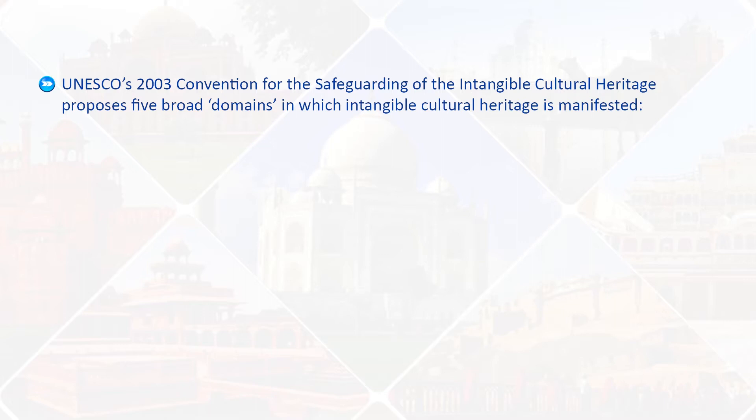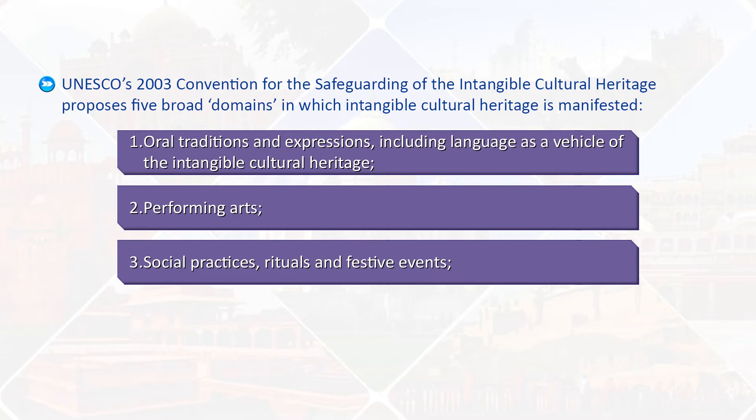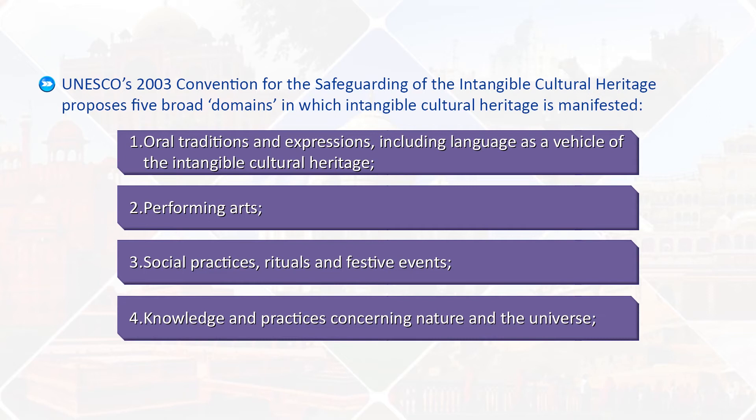It is called intangible because its existence and recognition depend mainly on the human will, which is immaterial and is transmitted by imitation and living experience. Intangible cultural heritage is also known as living heritage or living culture. UNESCO's 2003 Convention for the Safeguarding of the Intangible Cultural Heritage proposes five broad domains: one, oral traditions and expressions including language as a vehicle of intangible cultural heritage; two, performing arts; three, social practices, rituals and festive events; four, knowledge and practices concerning nature and the universe; and five, traditional craftsmanship.